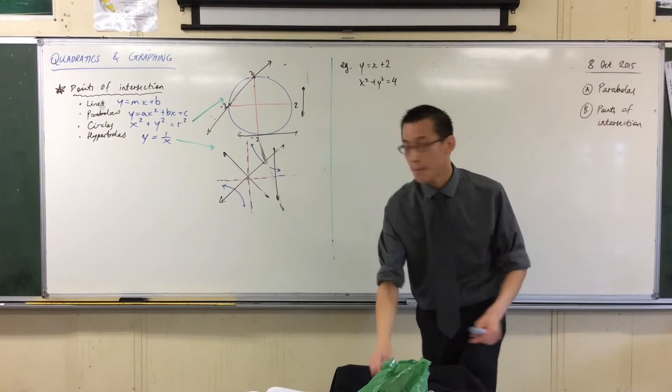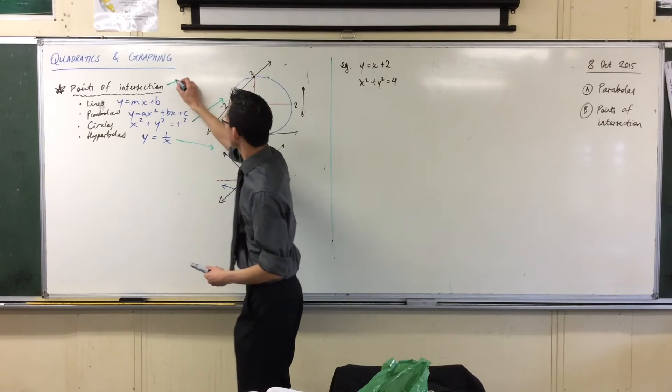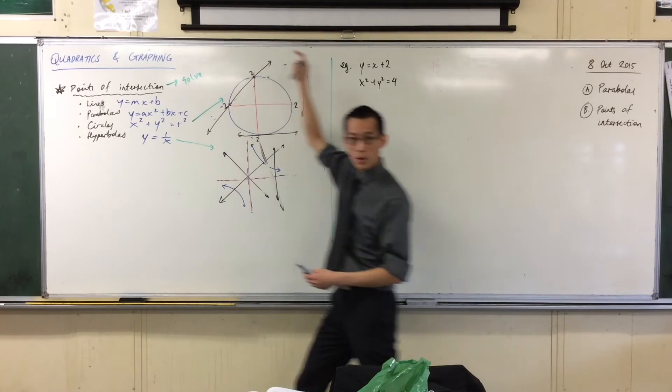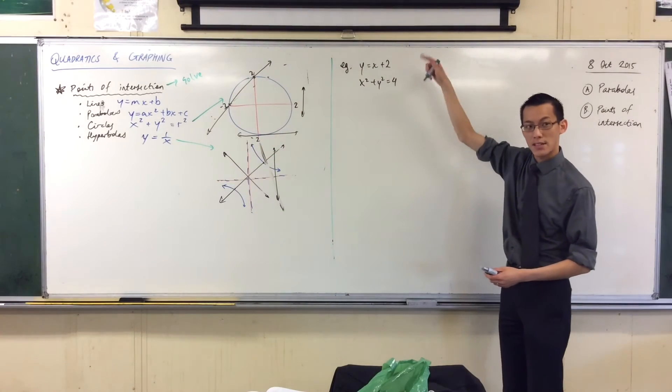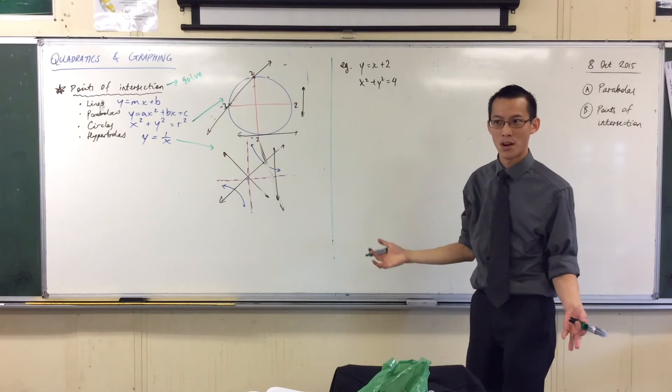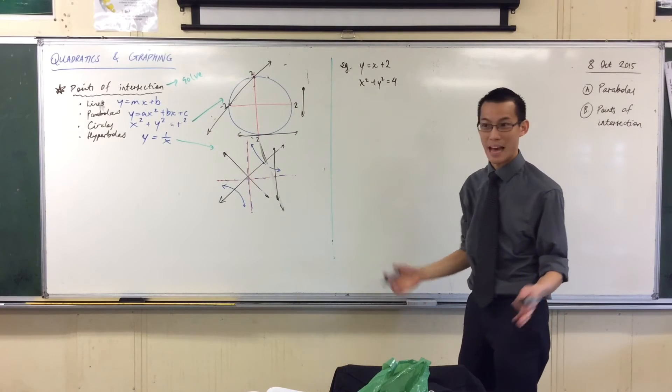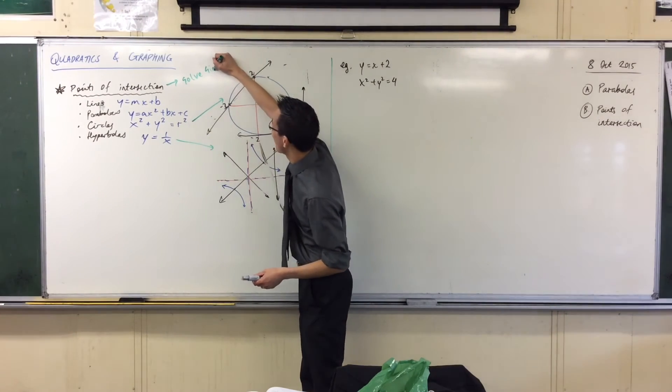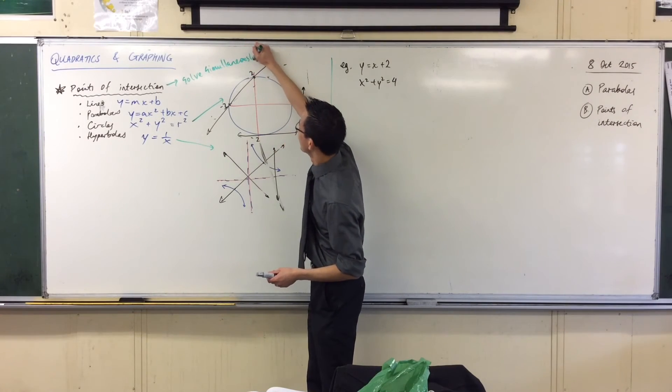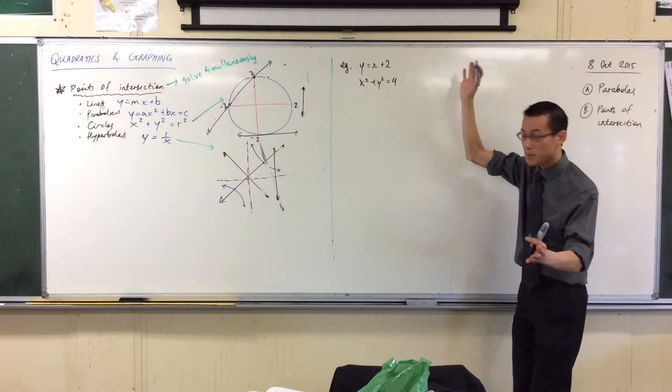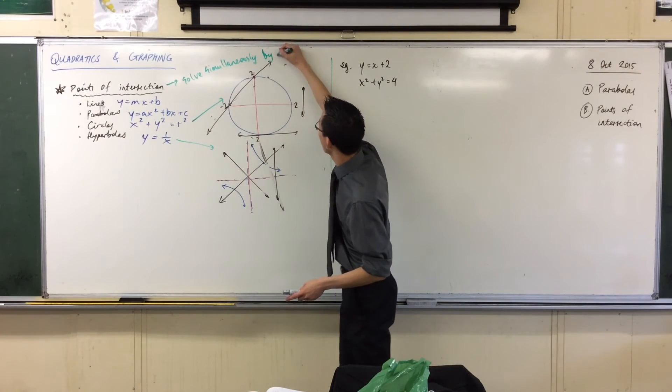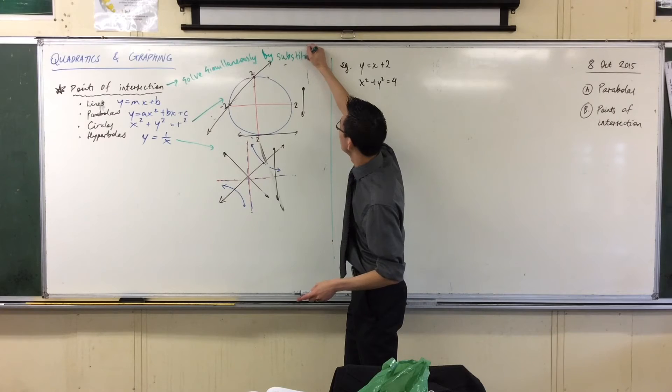Now, here's the key idea. To find points of intersection, solve these two equations, right? Because they're happening at the same time, we call these, you've met these before. Starts with an S. Things that happen at the same time. Simultaneous. Thank you very much. Solve simultaneously, solve these two at the same time by substitution. Is that enough S's for you? Solve simultaneously by substitution.